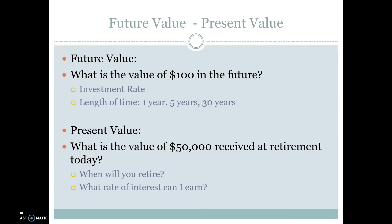Now, the two fundamental sides of the time value of money — and you've seen this in the game we just played. In the game, you were given two different choices between some amount of money today, which is what we call the present value, and some amount of money in the future, which is what we call, obviously, the future value. Finance naming: not super clever. These are the two sides of the coin, the two distinct points of tension in time value of money problems.